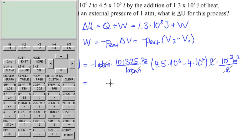That minus there, 101,325 times, parenthesis, 4.5 EE6 minus 4 EE6, parenthesis, times 10 to the minus 3. Okay, enter.